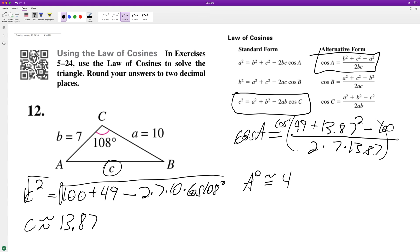And then angle B is going to be equal to 180 minus 43.31 minus 13.87, which will give us approximately 28.69 degrees.